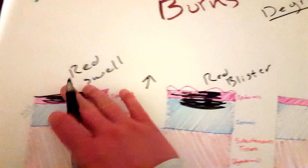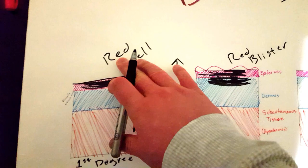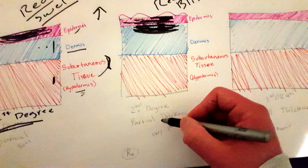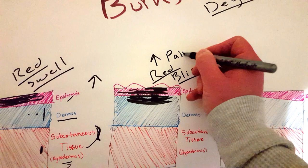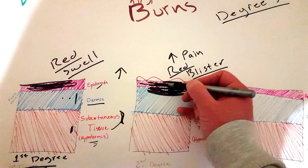You always have red with the first degree, aka superficial burn. It'll be red and then you might have some swelling. With a second-degree burn, also known as partial thickness, you're going to have redness, blistering, and a lot of pain. This means that the first layer of skin, the epidermis, is completely damaged and the second layer, the dermis, is partially damaged.